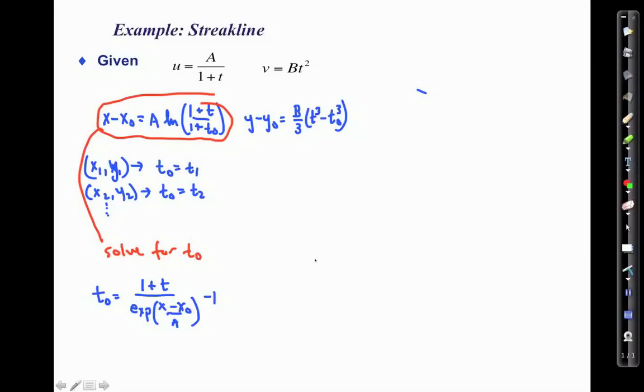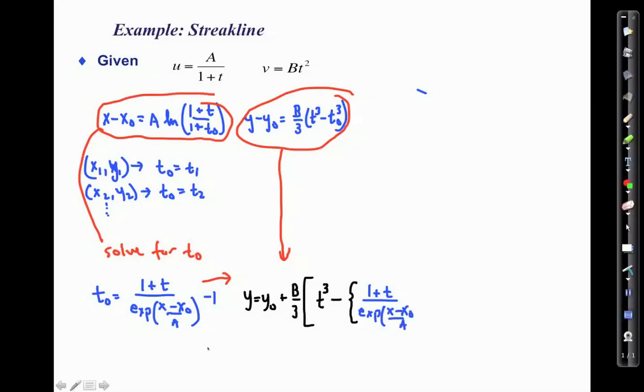Now we want to plug that and combine that into this equation here. So what we get in the end would be y is equal to y_naught plus b divided by 3. Now we're replacing t_naught. So here we have t cubed minus, and then we're going to have this expression that we solve for t_naught. So that is (1 plus t) divided by the exponent of (x minus x_naught) divided by a, minus 1. And then that whole quantity has to be cubed. And so that is our expression here for the streak line.